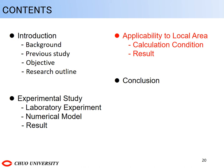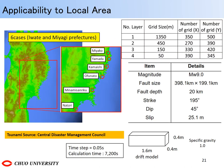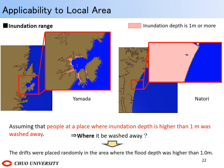Next is about applicability to a local area. We applied this to the local calculation. This calculation targeted five locations in Iwate and Miyagi Prefecture: Miyako, Yamada, Kamaishi, Minamisanriku, and Natori. The calculation areas are shown in the table. The time step is 0.05 seconds and the calculation time is 7200 seconds. The drifting objects imitated a human being with a length of 1.6m, a width of 0.4m, a height of 0.4m, and a specific gravity of 1. We assume that people at places where inundation depth is higher than 1m were washed away, and examine where they were washed away. First, we calculate the inundation range, and drifts were placed randomly in the area where it was higher than 1m.